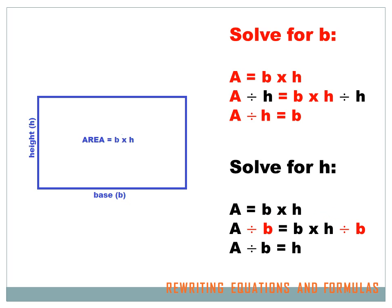Let's look at another one. I've got area equals base times height, and I want to solve this time for height. So I want to isolate that h, which means I've got to get rid of times b. And to get rid of a times b, I divide by b. If I divide the right by b, I've got to divide the left by b. The b's cancel each other out, and on the right side I've got nothing but h left. On the left side, I've got a divided by b equals the height.